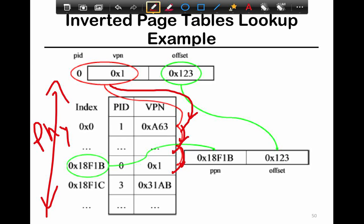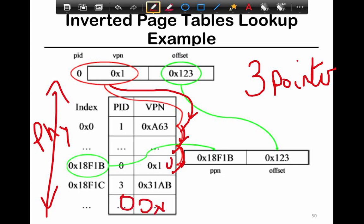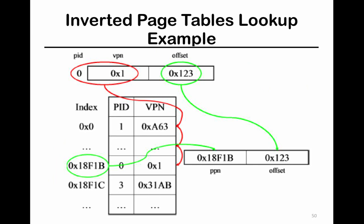In the worst case, the search is proportionate to the size of the physical address space — with 16 GB you could potentially scan all entries. However, you rarely do that because some form of hashing is used. The worst case of inverted page tables is much worse than tree-based structures, where all accesses are always within three pointer dereferences. But in the average case, with hashing, you end up doing quite well.